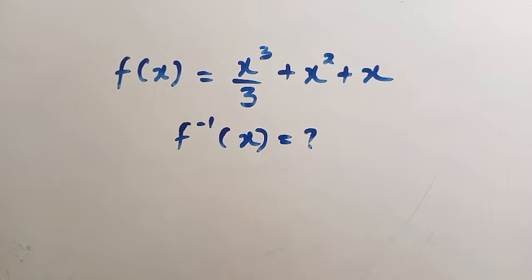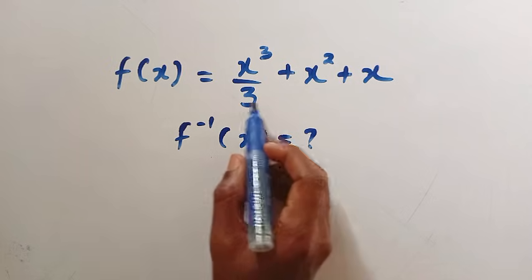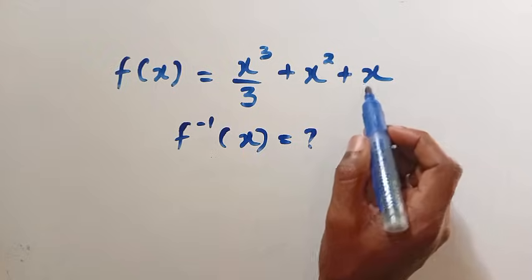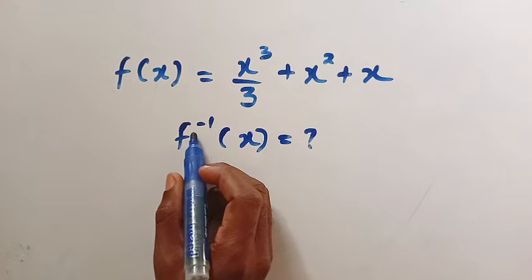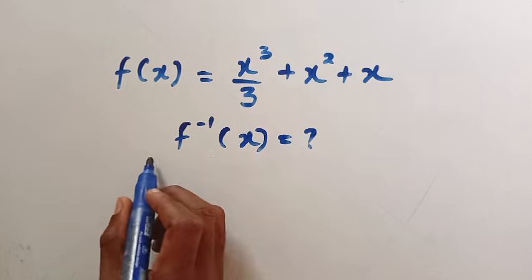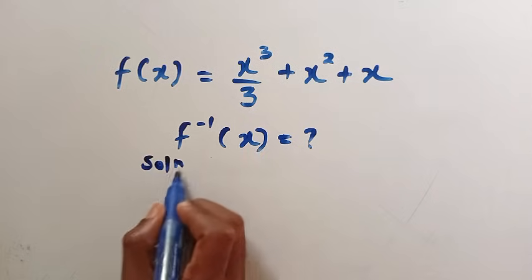We have f of x equals x cubed divided by 3 plus x squared plus x. And what is the inverse of this function? So let's solve this problem step by step.